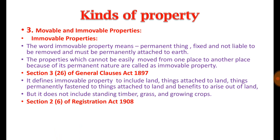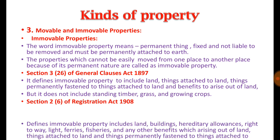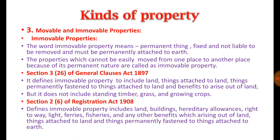Section 2(6) of the Registration Act provides a definition similar to that under the General Clauses Act 1897. According to this definition, immovable property includes land, buildings, hereditary allowances, right of way, right to light, right of ferries, fisheries, and any other benefits arising out of land, as well as things attached to land and things permanently fastened to things attached to earth.